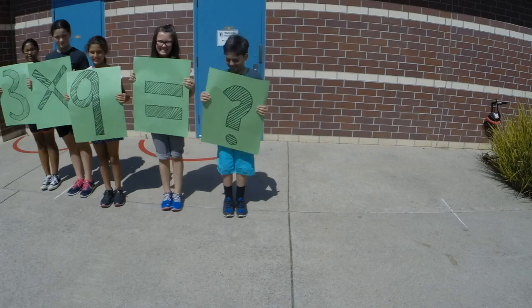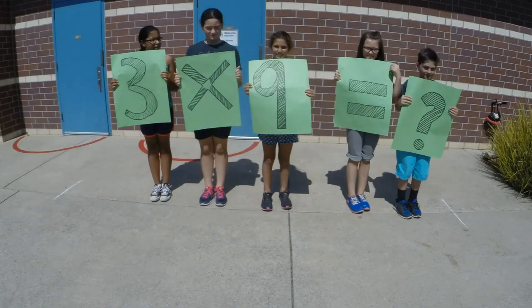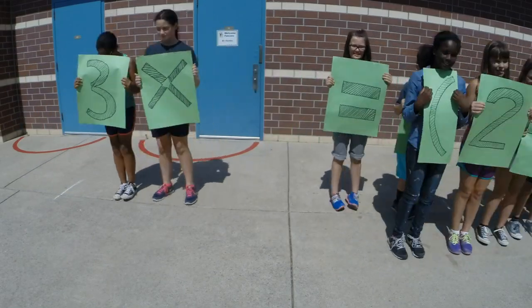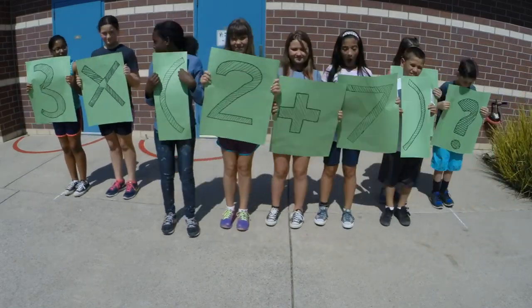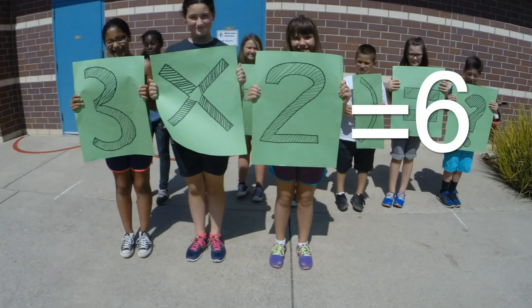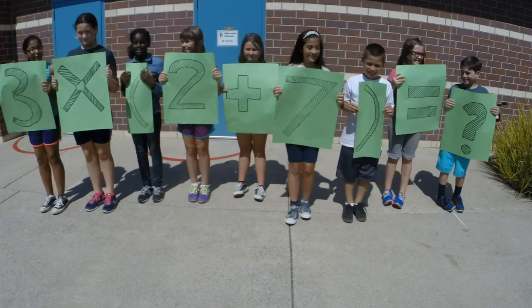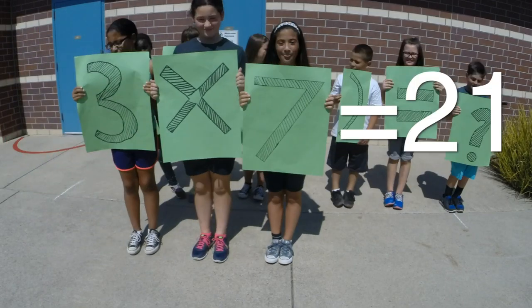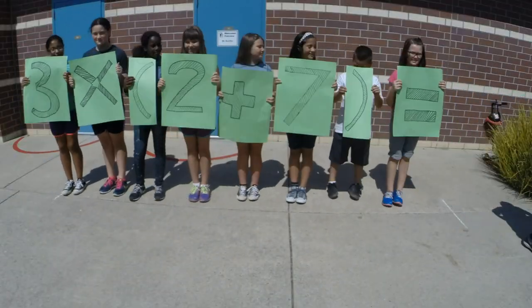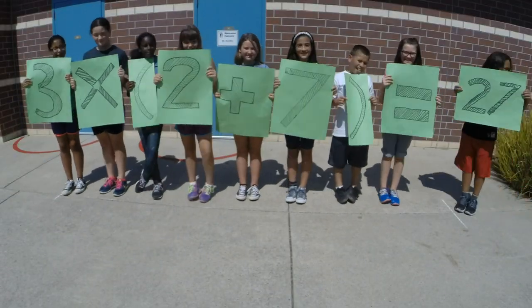Let's use the problem 3 times 9. Decompose 9 into 2 addends. We decompose 9 into 2 plus 7. Now multiply the addends 2 plus 7 by 3. We will add the two products 6 and 21 together to get the final product 27.